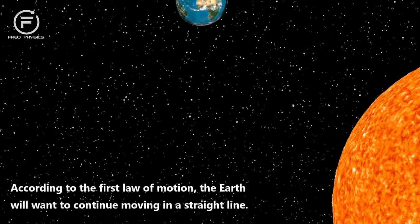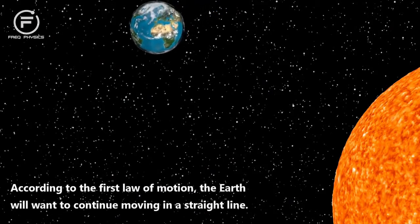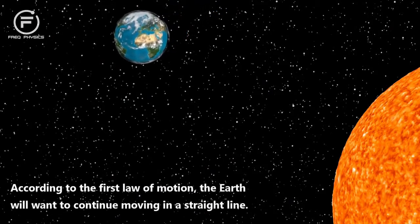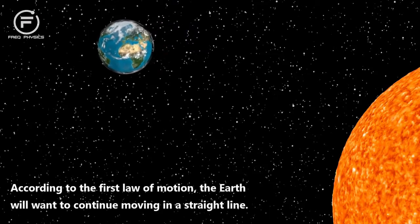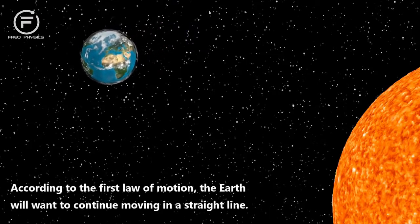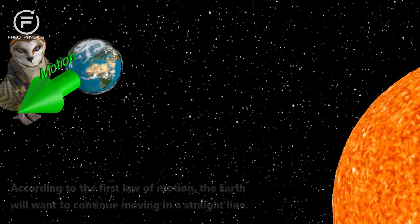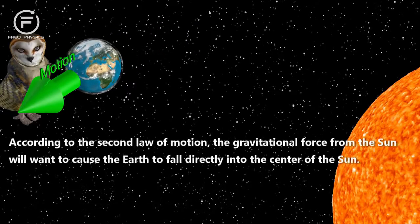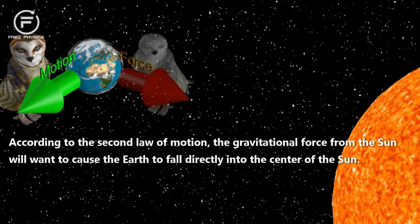According to the first law of motion, the Earth will want to continue moving in a straight line. According to the second law of motion, the gravitational force from the Sun will want to cause the Earth to fall directly into the center of the Sun.